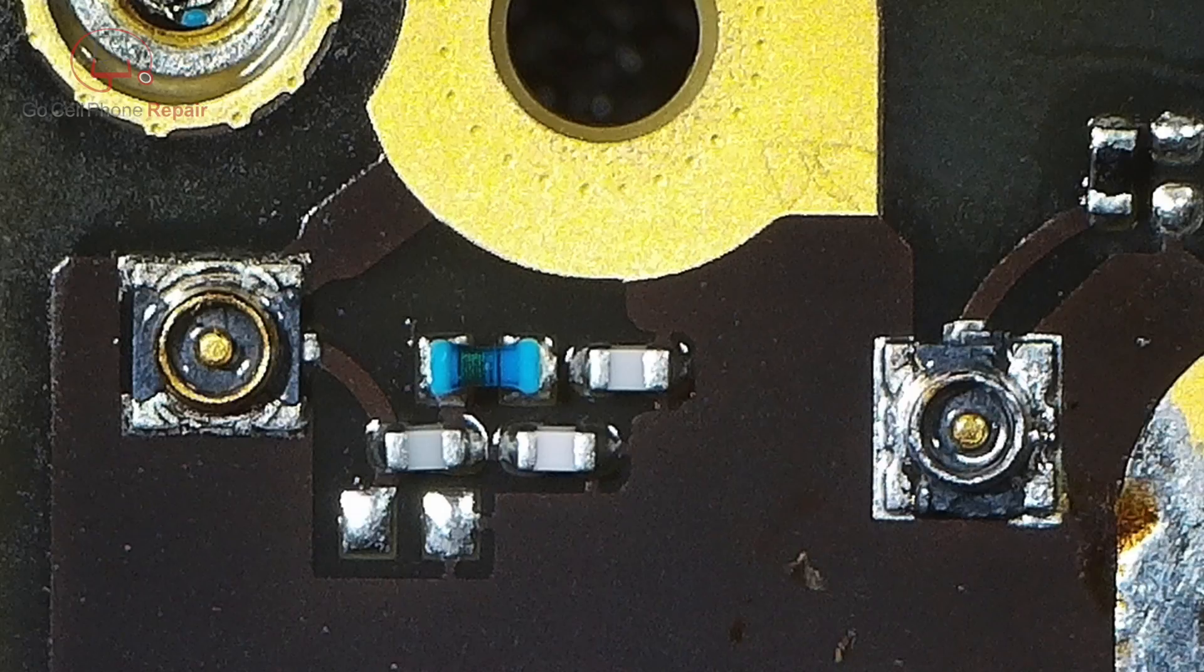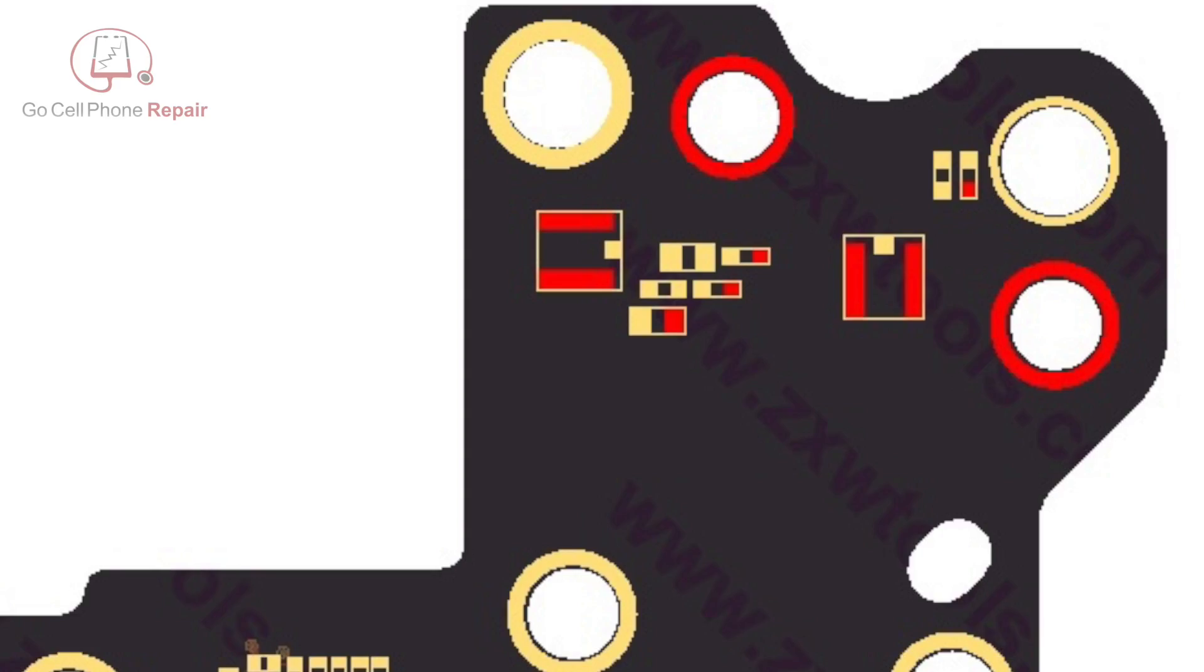When you get over here to the one that's on the end of the board, you can actually see where some of the traces go. A lot of them go to antenna ground. We need to be a little more careful here because there are some components that can be damaged if you're not careful.